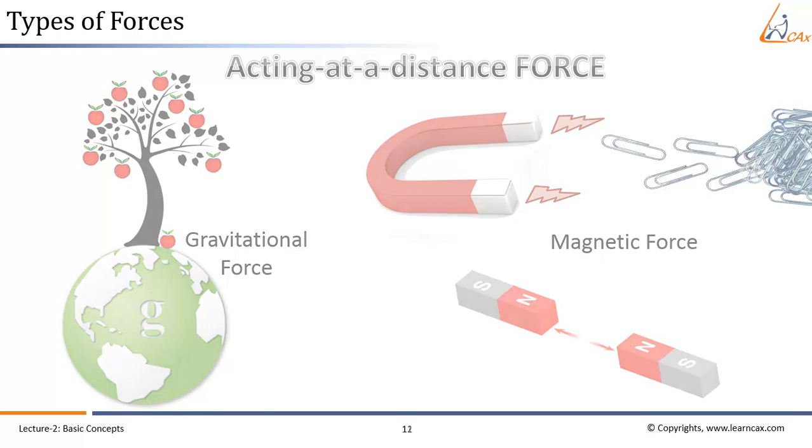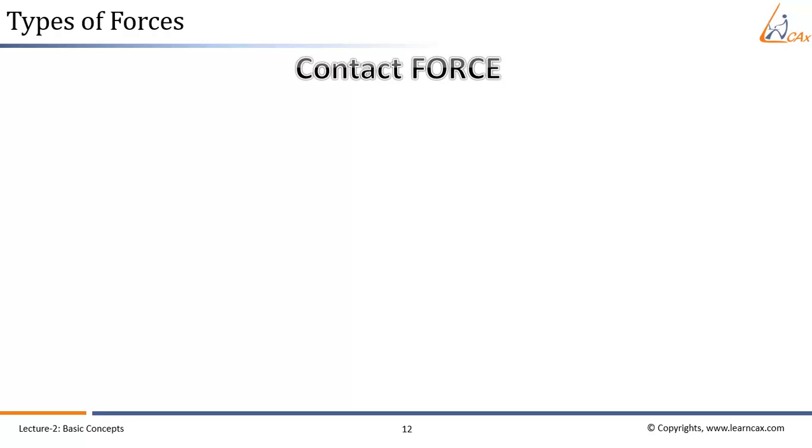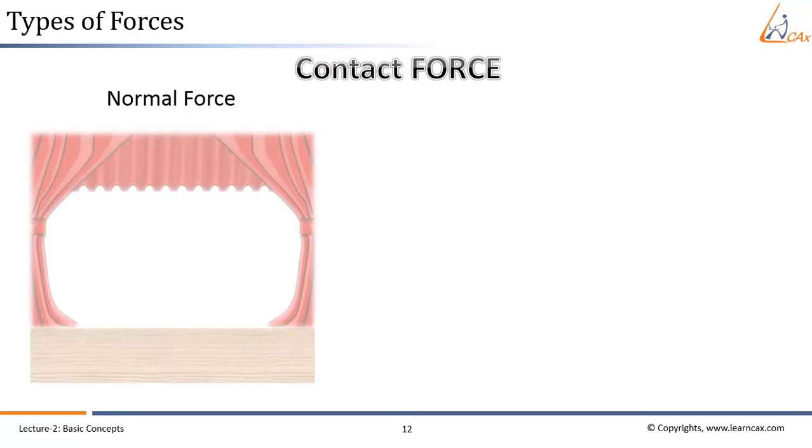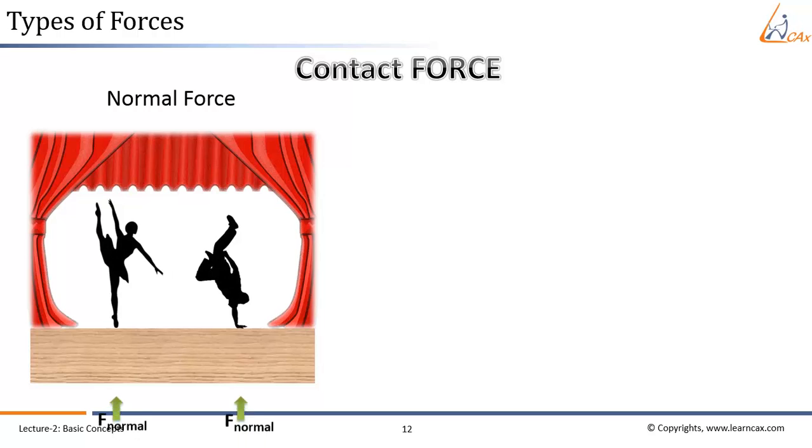The second category of force is the one which results due to direct contact between objects. And within this category, there are different types of forces. We will have a quick view on few of these forces. To start with, Normal force, which is the support force exerted upon an object, which is in contact with another stable object. In this case, the stable object is the dance floor or the stage, which supports the weight of the dancers.